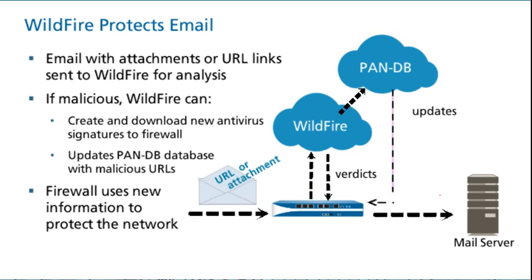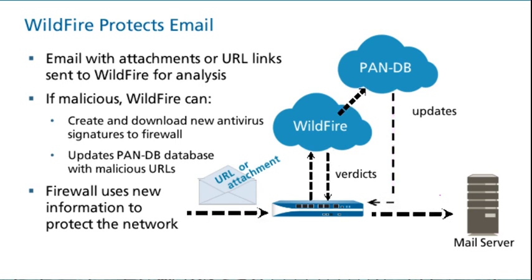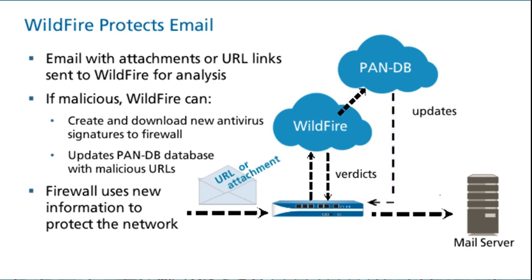If you have a Wildfire and PanDB license, your firewall can block access to newly discovered malware and phishing sites in as little as 5 to 10 minutes. If Wildfire determines that a file attachment or URL link is malicious, it includes the email header information in the Wildfire submissions log that it returns to the firewall. If User-ID technology is enabled, you can use the log information to quickly find and remediate the threats received by your users.